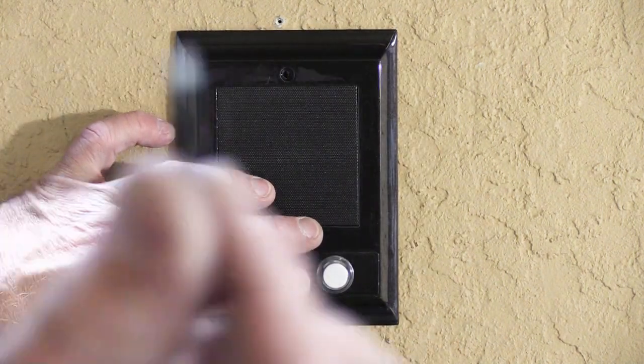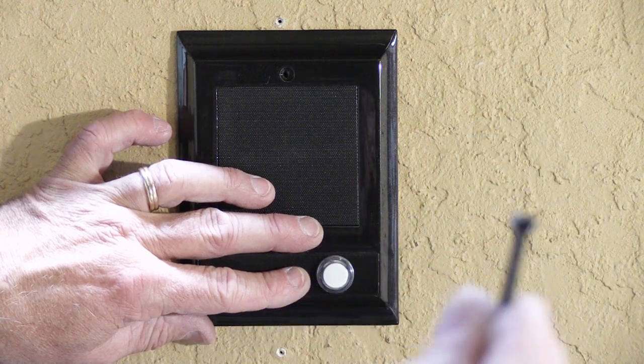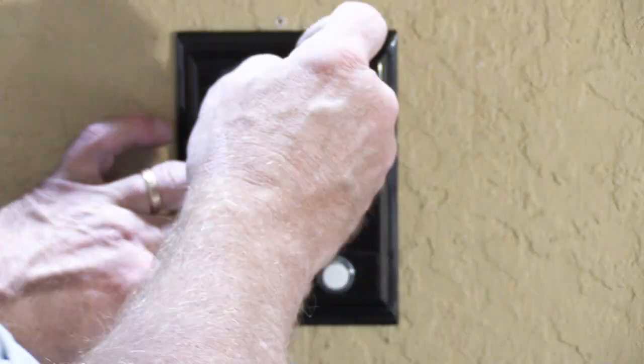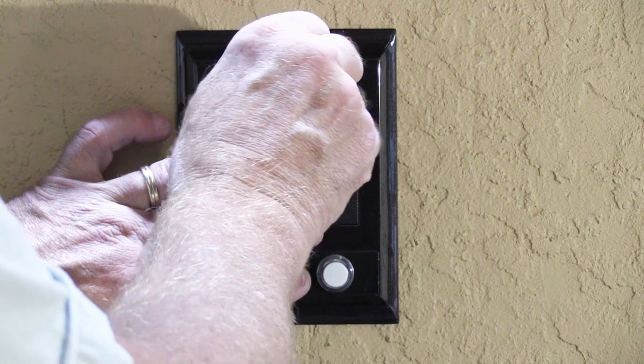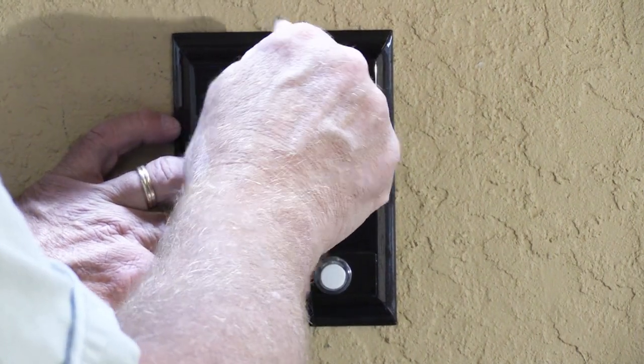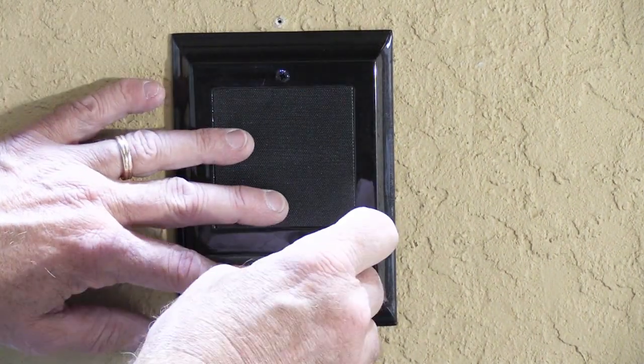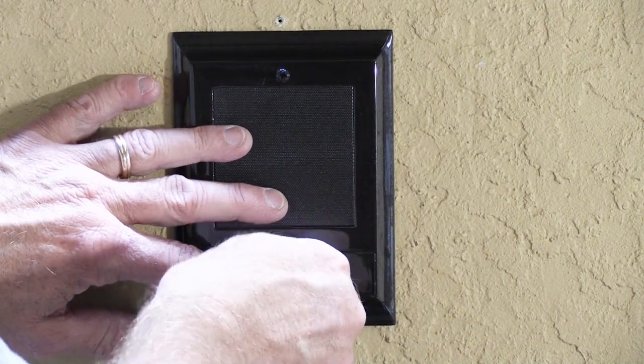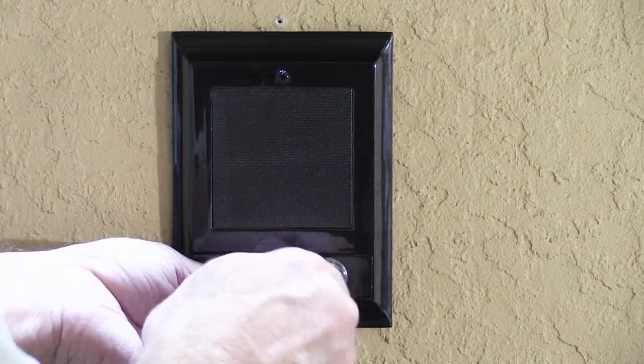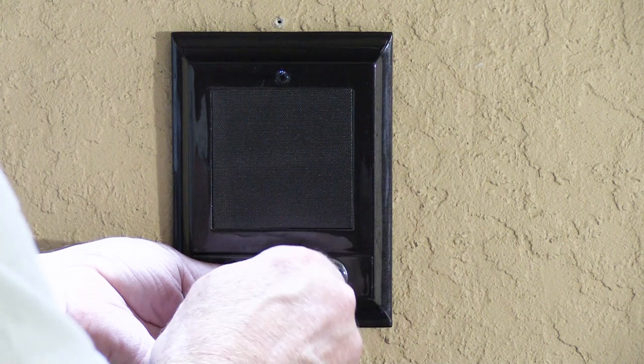And then you take your brand new screws that are finished in the same color as the speaker, and you put them through the hole. And you just, with your fingers, start to thread them into the little tabs on the wall housing.